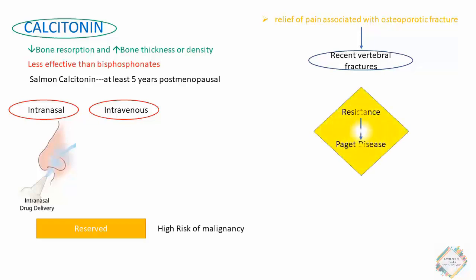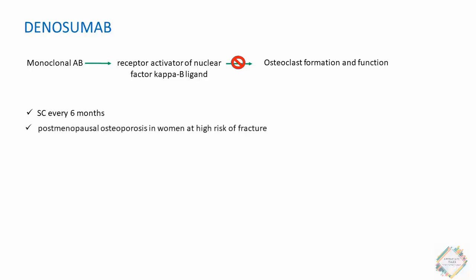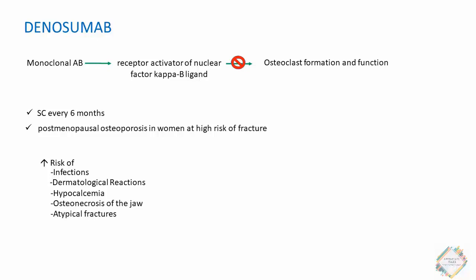Resistance to calcitonin develops with long-term use, and it is also used in the treatment of Paget's disease. Denosumab is a monoclonal antibody that targets RANK ligand (receptor activator of nuclear factor kappa-B ligand), thereby inhibiting osteoclast formation and function. It is approved for post-menopausal osteoporosis in women at high risk of fracture, administered subcutaneously every six months. Associated risks include increased infections, dermatological reactions, hypocalcemia, osteonecrosis of the jaw, and atypical fractures. Denosumab is reserved for women at high fracture risk who are intolerant of or unresponsive to other osteoporosis therapies.